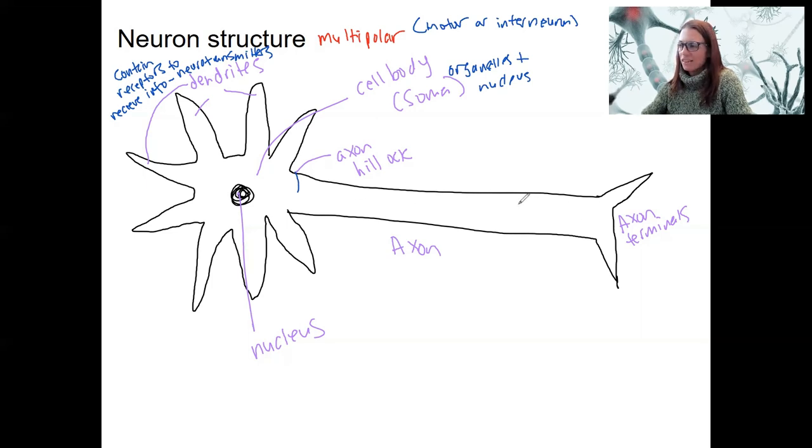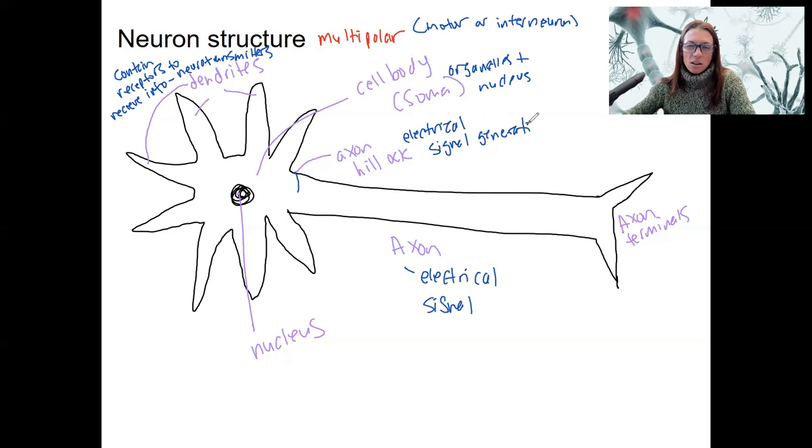We've got this axon, it's pretty thin. I drew this a little fat projecting away. This is going to be where the actual electrical signal is carried. It's kind of like a wire. The axon hillock is where the electrical signal is generated, the action potential. Next week will be the details of how we get from the incoming signals to an action potential.